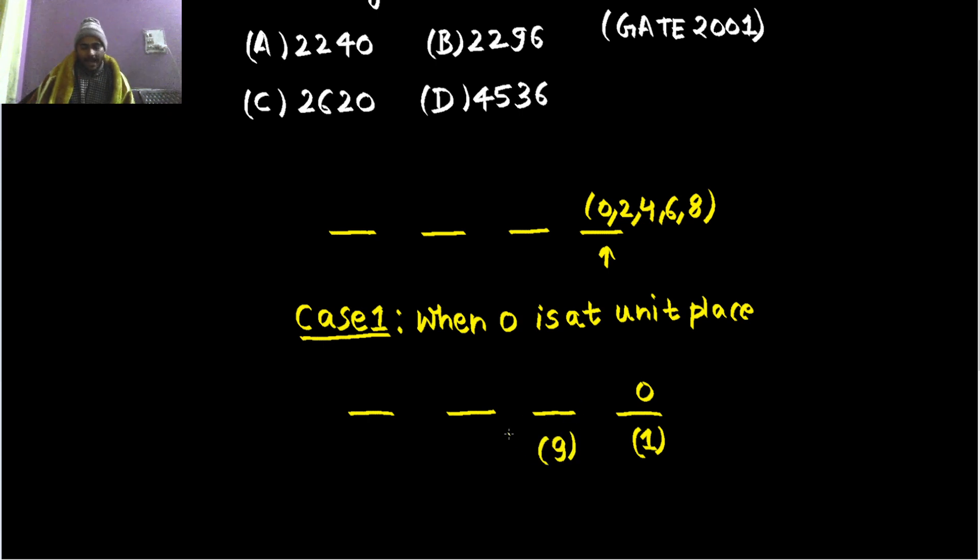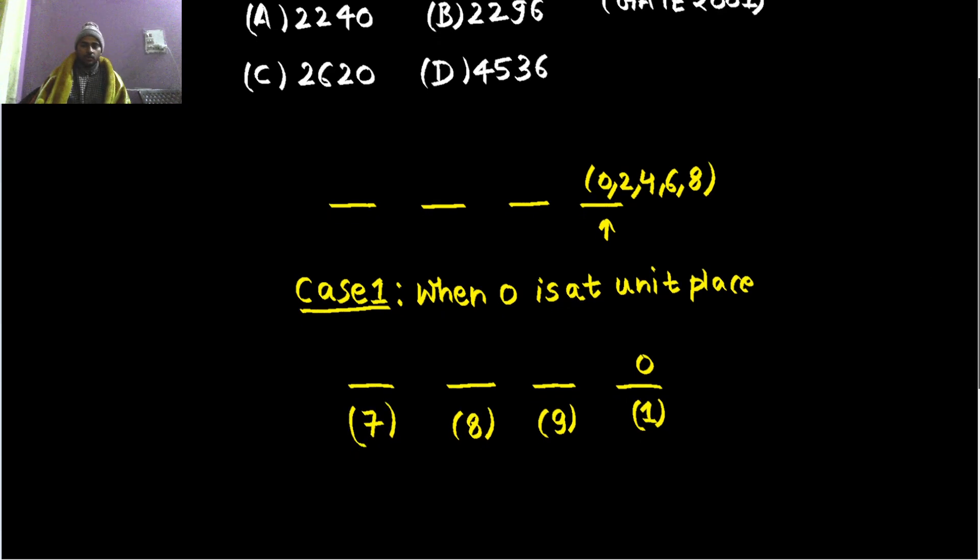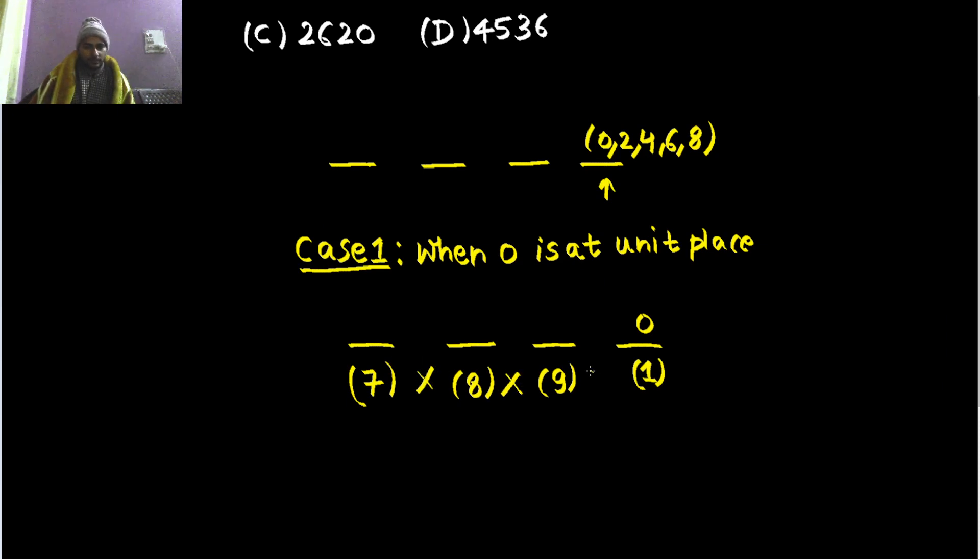This place, the place just after 0, can have now 9 possibilities because I have a total of 10 numbers. One I have already used which is 0. So I have 9 possibilities here. Now again, two numbers are used. I had 10 numbers, two of them are used. Now I have 8 possibilities here. Now I have used 3 numbers. I have 7 possibilities here. And we multiply the possibility. So total ways, total possibilities from this case will be 9 into 8 into 7. So 72 into 7, which is 504 from this case.